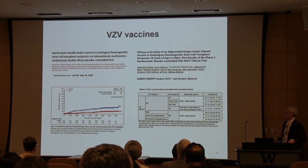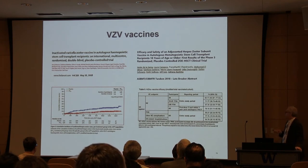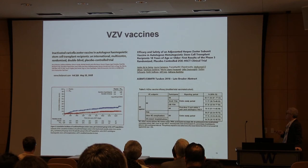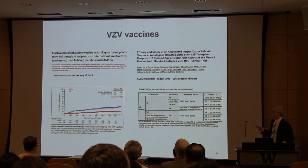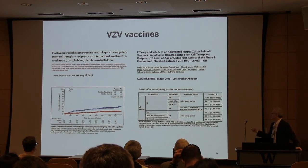There are now two vaccines proven in the autologous transplant population in phase three settings. One is a live-attenuated vaccine with massively reduced activity, and the other is an adjuvanted vaccine. Merck has decided to discontinue the live-attenuated program, so the adjuvanted vaccine — Shingrix — will go forward and can be used in the autologous transplantation setting as well.